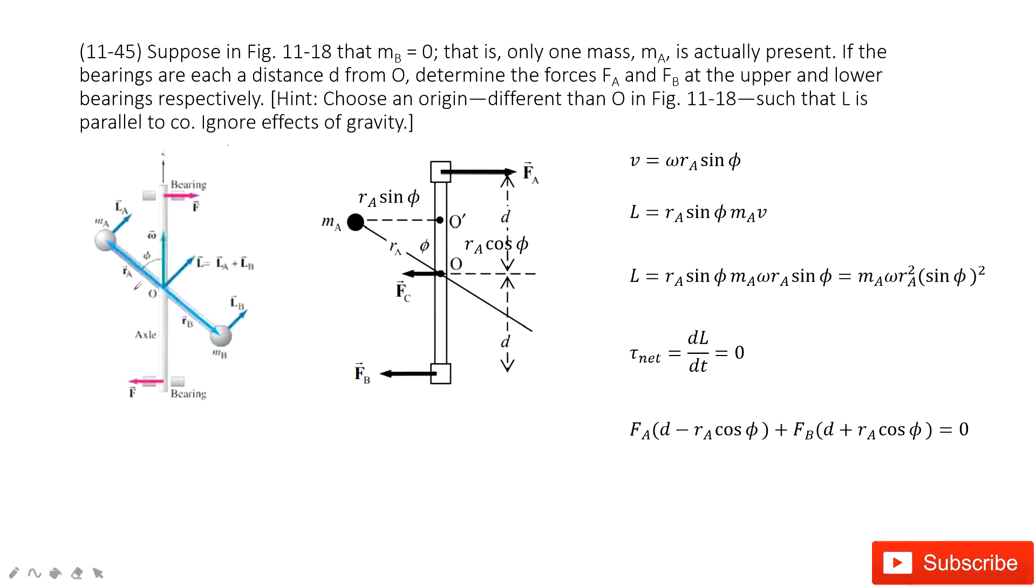Chapter 11 is about angular momentum. From these follow-up problems, in this time we consider object B does not exist. The mass mB is 0, so only one mass mA exists.